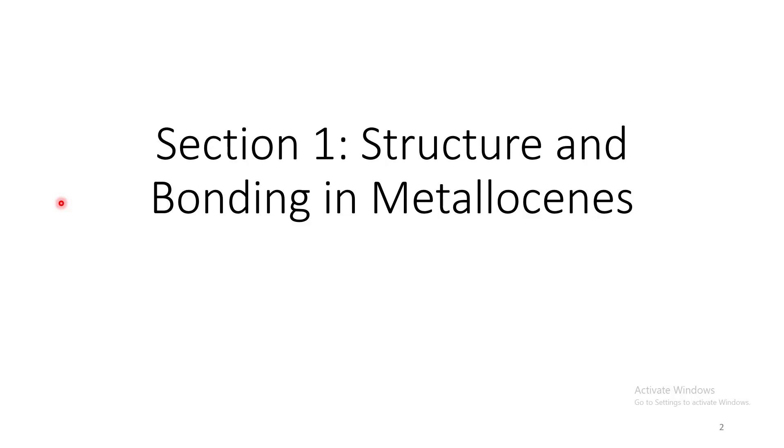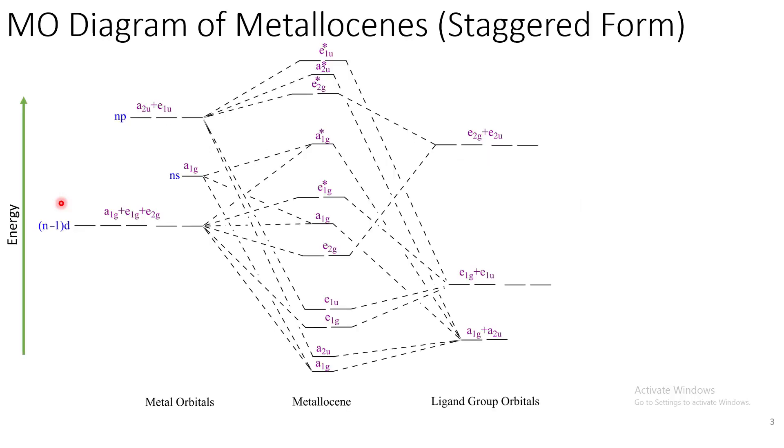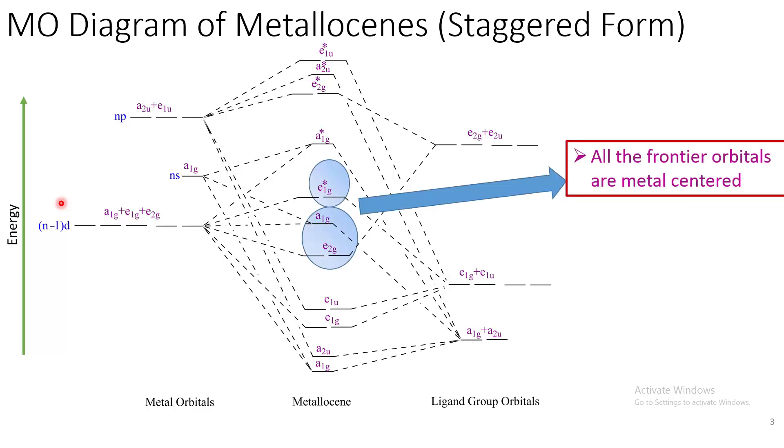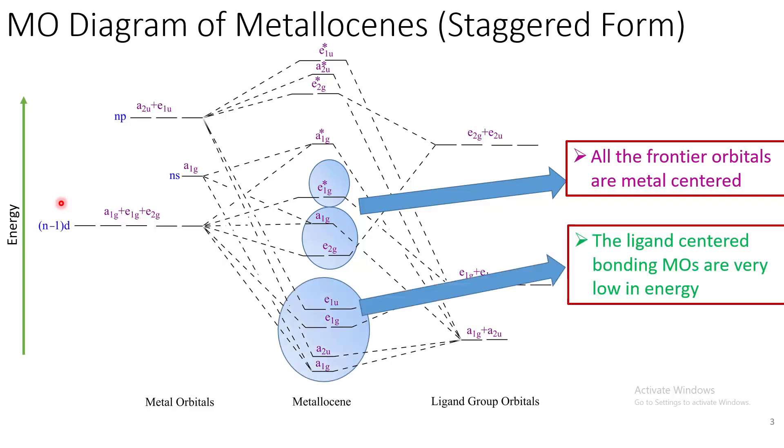Let us come to the first section about structure and bonding in metallocene. Let us first consider the molecular orbital diagram of metallocene. If we look at this diagram carefully, we can see that all the frontier molecular orbitals are metal-centered. The ligand-centered bonding molecular orbitals are very low in energy.